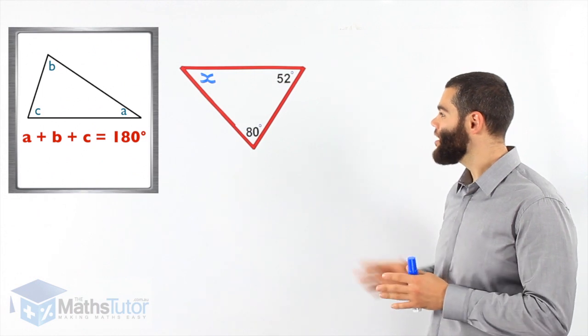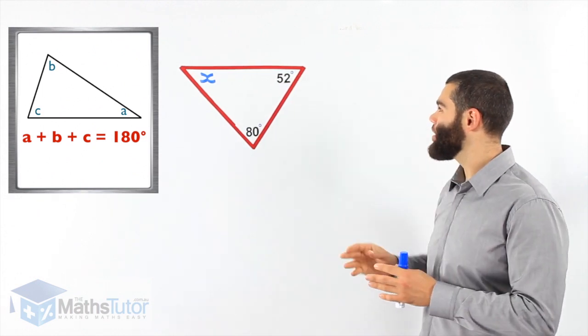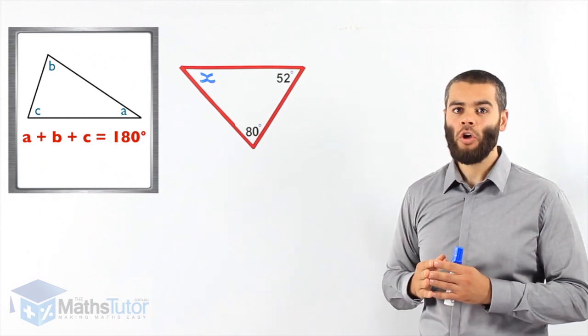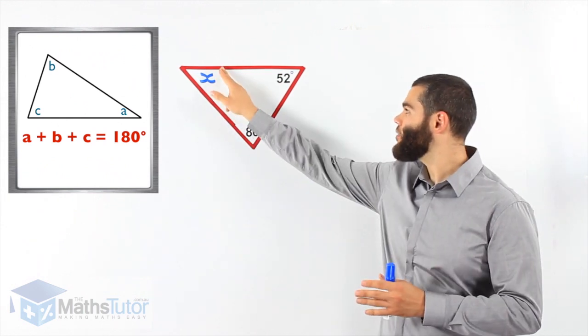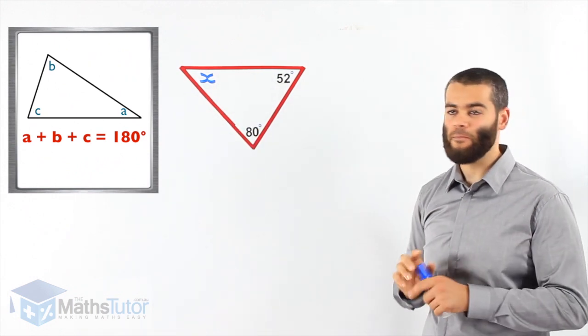Here we have a triangle, and we're asked to find the missing angle marked with an X. We can see that this angle is marked at 80 degrees, and this angle is 52 degrees. We need to know and find the size of this angle here marked with an X. This is how we do it.